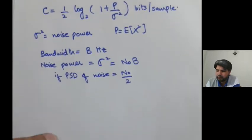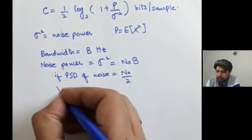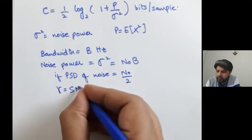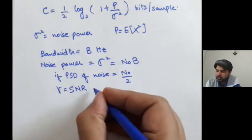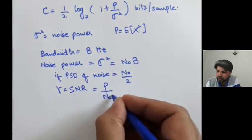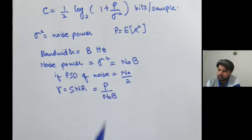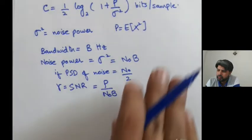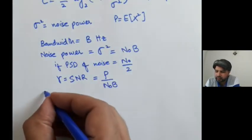Then we said that we can define gamma, which equals the signal to noise ratio, and that can be written as P over N naught B. And under these conditions, the capacity C can be written as B log base 2.